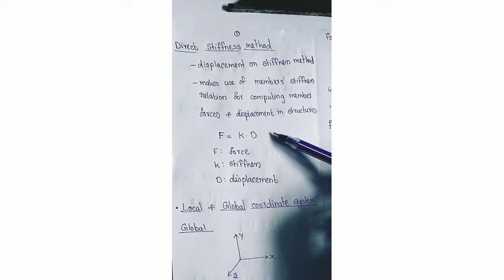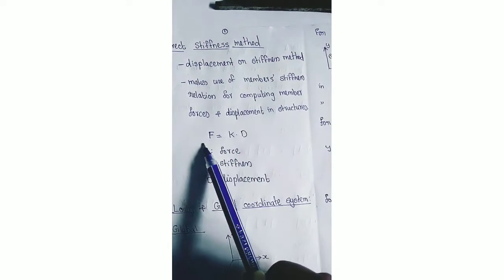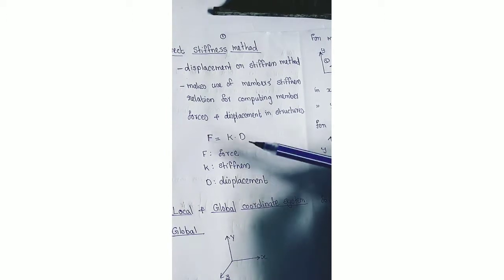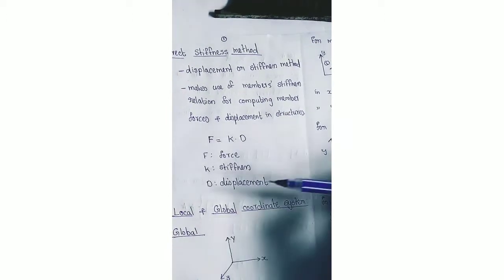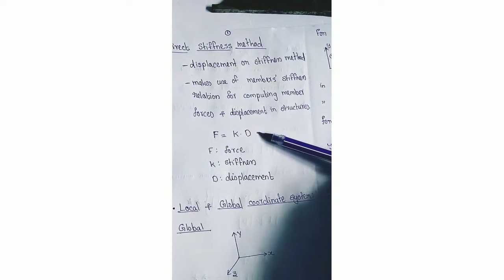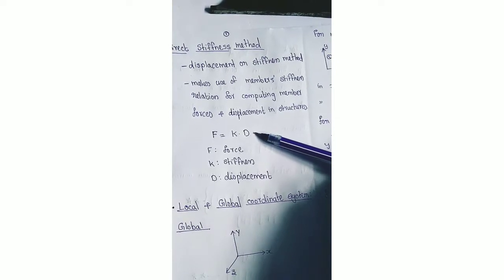The relation or formula connecting force, stiffness, and displacement is f = k × d, where f is the force, k is the stiffness, and d is the displacement. Usually these are expressed in matrix form, so f is the force matrix, k is the stiffness matrix, and d is the displacement matrix. This formula f = kd is used throughout the entire direct stiffness method of analysis, so you have to memorize it.